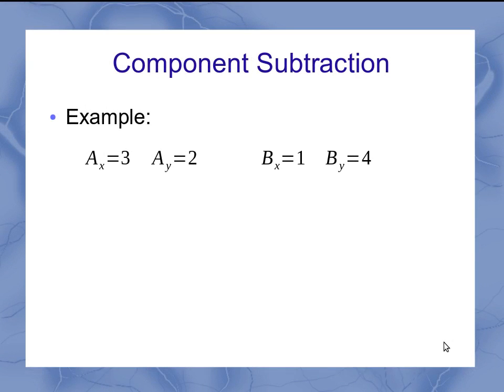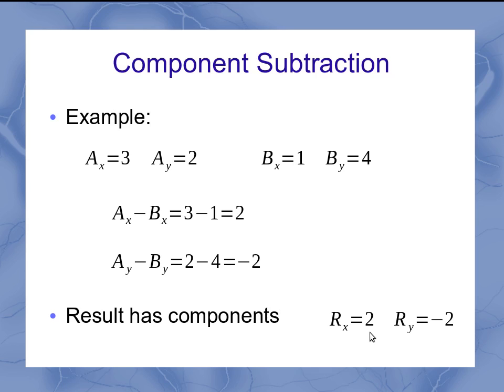If I take those exact same two vectors but now do subtraction, then I'm taking my 3 minus my 1 for the x component and my 2 minus 4 for my y component, giving me a result that has an x component of 2 and a y component of negative 2.